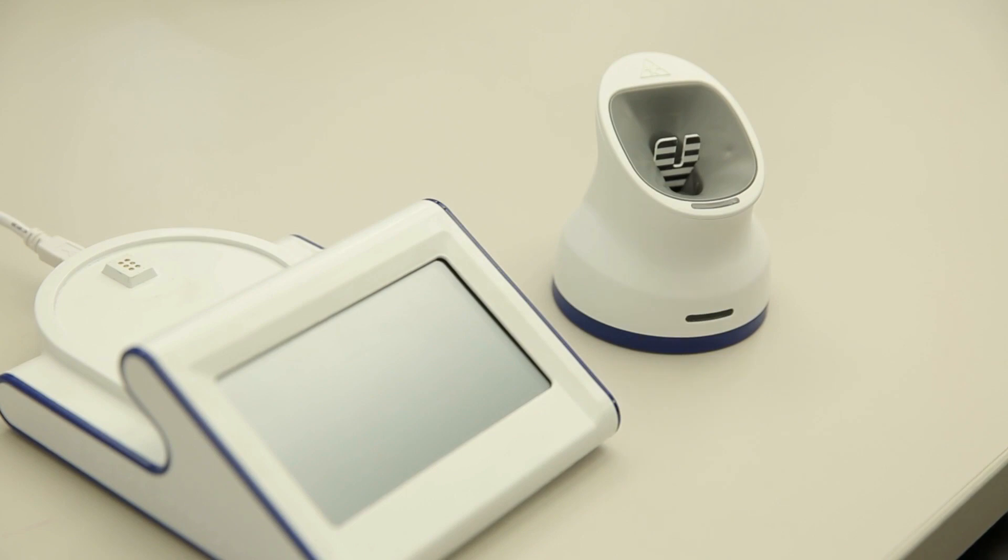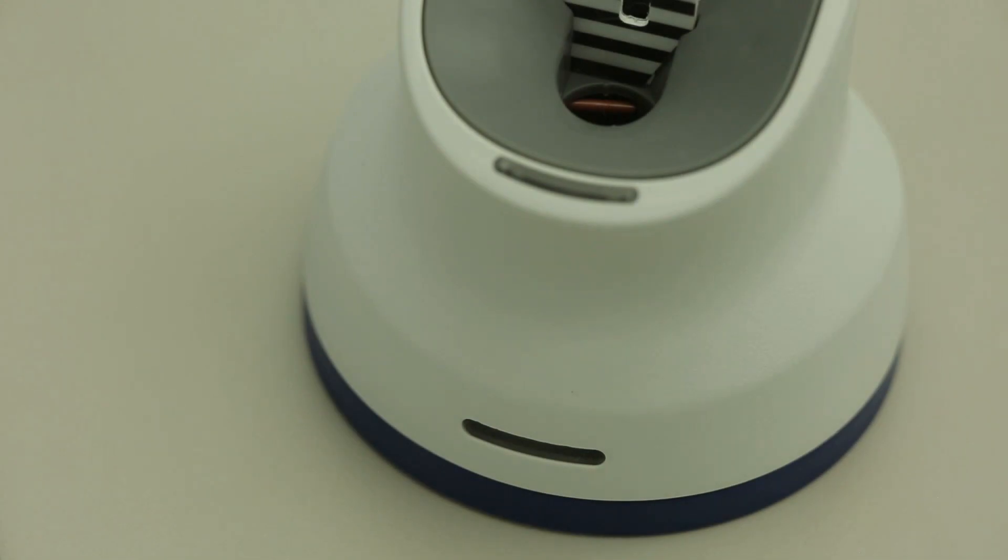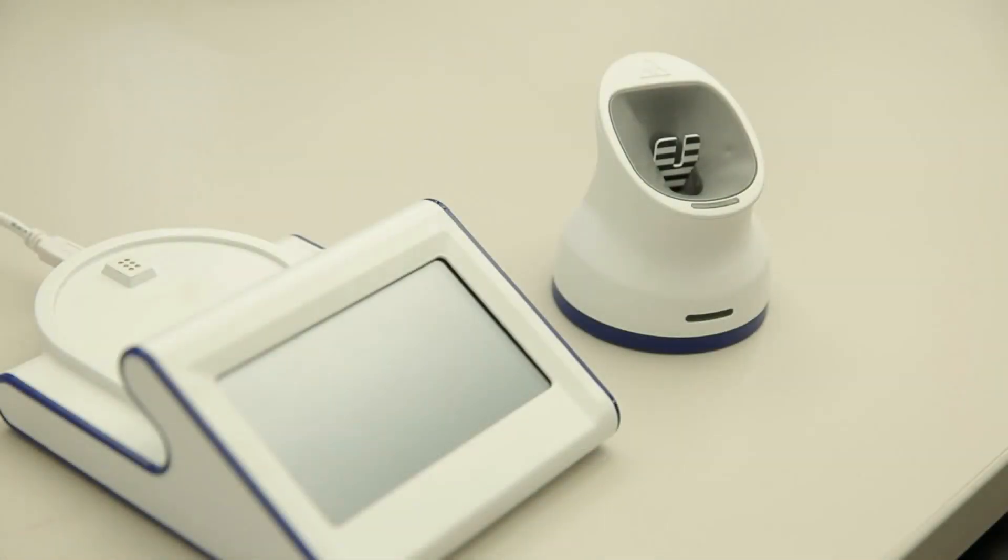A blinking colored light, excluding red, indicates the pod has entered power save mode. To exit power save mode, insert a test tube into the pod and tap the display screen or remove and reseat the pod on the base unit.